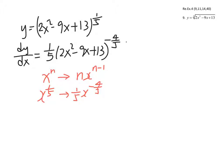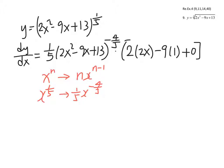Then we differentiate the inside, which gives us 2 times 2x minus 9 times 1 plus 0, so the inside derivative is 4x minus 9.